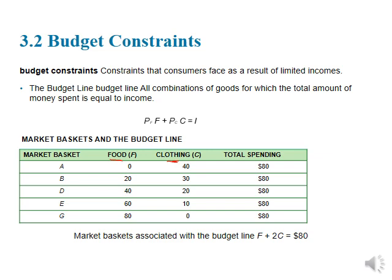Mathematically, what that'll look like is the price of food times the amount of food, plus the price of clothing times the amount of clothing, needs to sum up to how much money we have. If we have $80, regardless of what our preferences are — assuming we still prefer more to less, remember that assumption from last time — our total spending should equal that income.